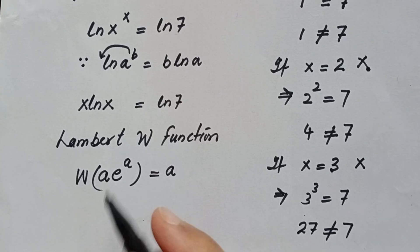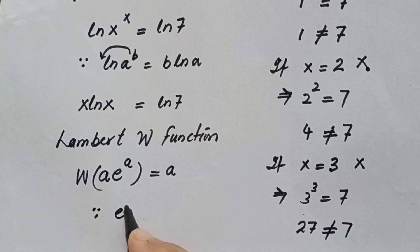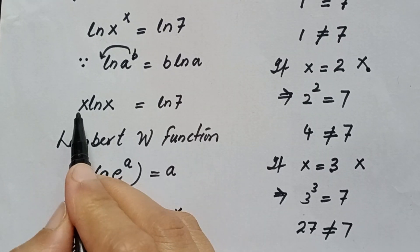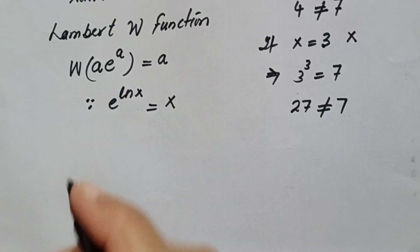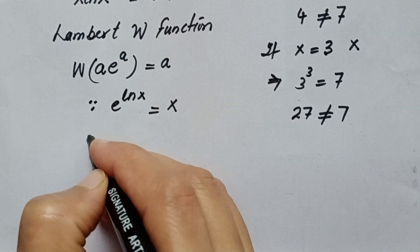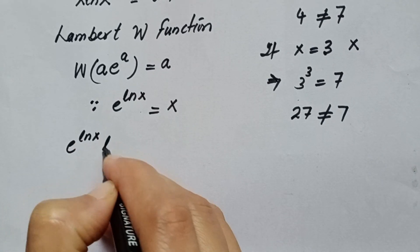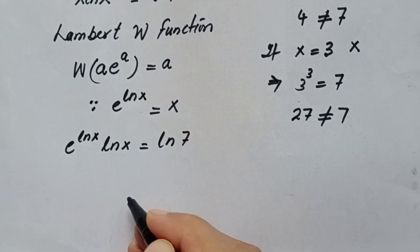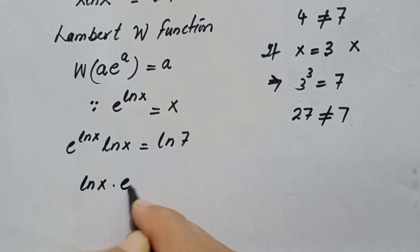I am going to use this Lambert W function. First, we know that we can write x as e^(ln x). We plug in the value of x, so the equation becomes: e^(ln x) · ln x = ln 7.